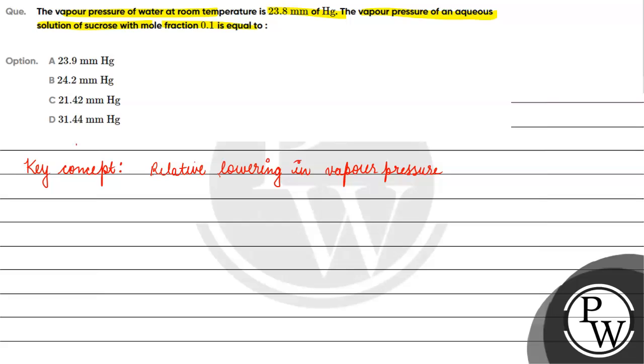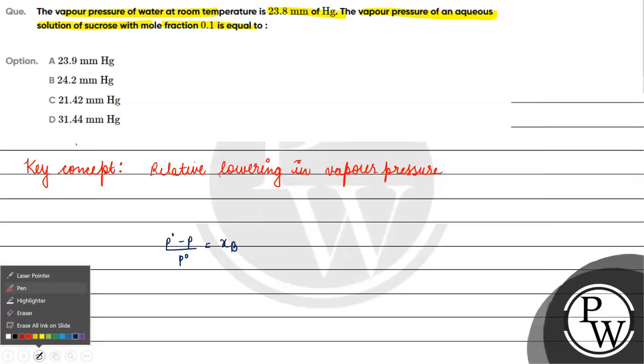The formula is: p° - p / p° equals the mole fraction of the solute. Here, p° is the vapor pressure of pure solvent.